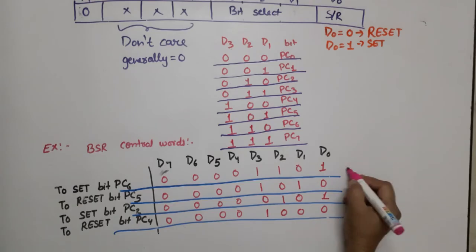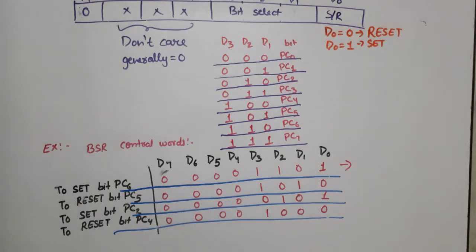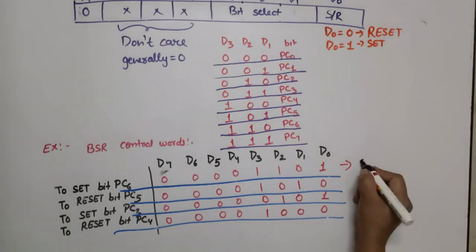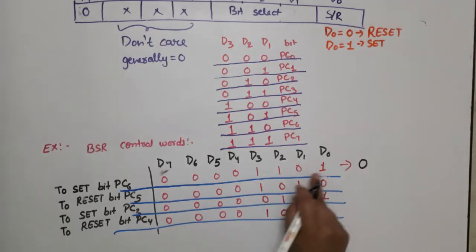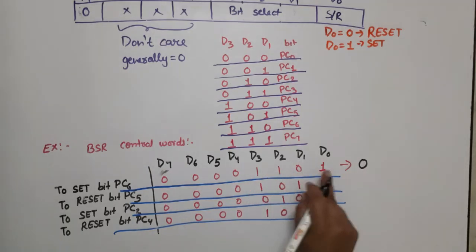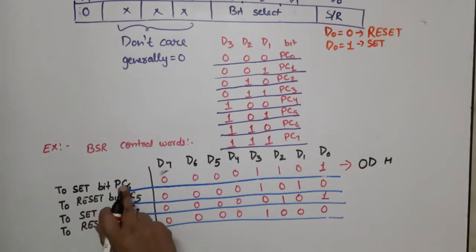Writing the values in hex: for setting PC6, the control word is 0 0 0 0 | 1 1 0 1, where the upper nibble is 0 and the lower nibble is 13 in decimal = D in hex, giving 0DH.